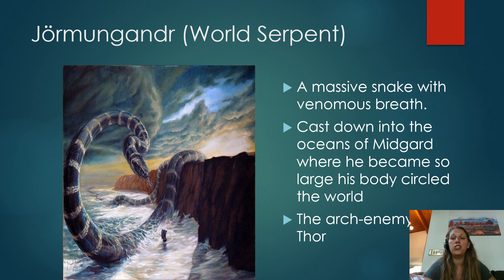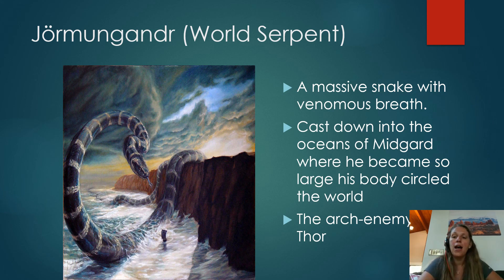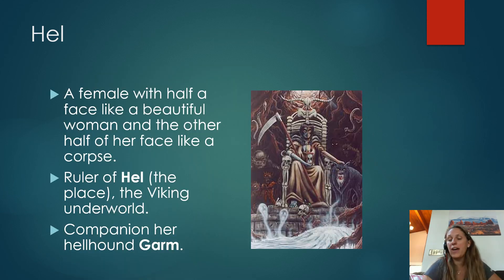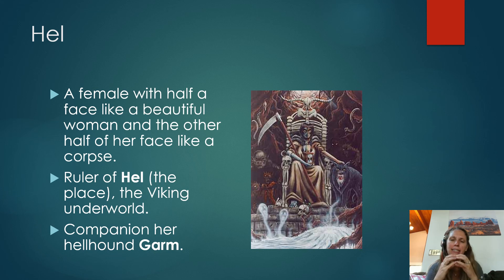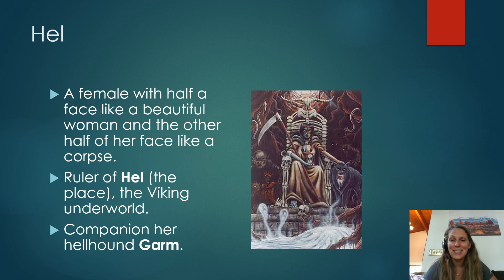Jormungandr is a giant serpent so enormous that he circles the entirety of the world. Thor really hates him — there's not even a clear given reason — but that's who Thor will tangle with at Ragnarok at the end of the world. Lastly, we have Hel. Even her depiction shows that duality — good and evil, beauty and chaos, all tightly linked together. Half of her face is a beautiful woman and the other half is a corpse. She is the ruler of Hel, the Viking underworld, and has a giant hellhound named Garm as her companion — not to be confused with Fenrir, her brother. Those two are completely different entities.